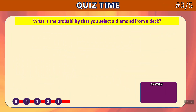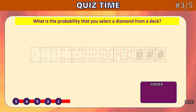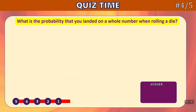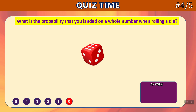Question 3: What is the probability that you will select a diamond from a deck? Time's up. There are 13 diamonds out of 52 — that is your answer: 13 out of 52. Question 4: What is the probability that you landed on a whole number when rolling a die? All numbers on a die — 1, 2, 3, 4, 5, and 6 — are whole numbers. So the answer is 6 out of 6, which equals 1, or 100% certainty.